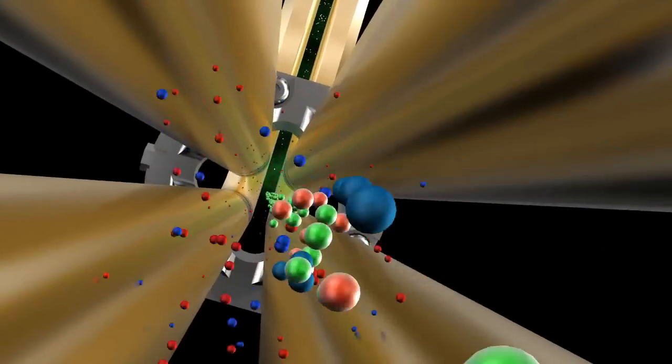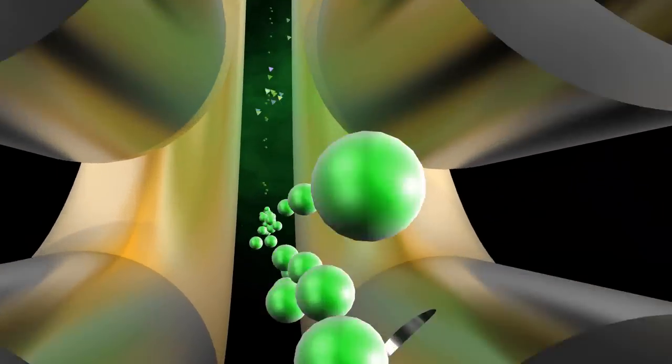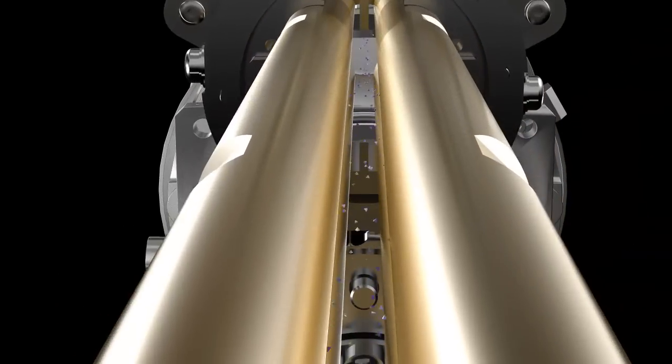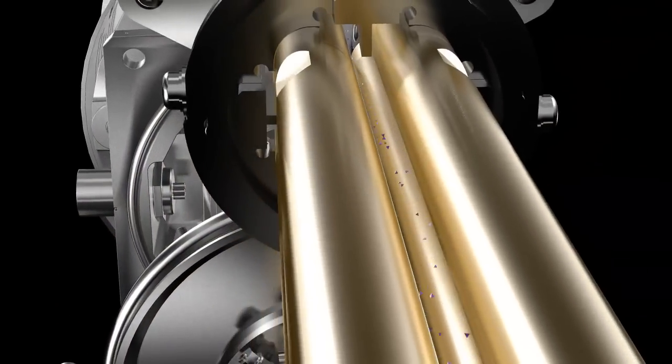Following parent ion selection in Q1, the newly designed curved LINAC collision cell generates true database-searchable fragment ions and accelerates them into Q3 to eliminate crosstalk.